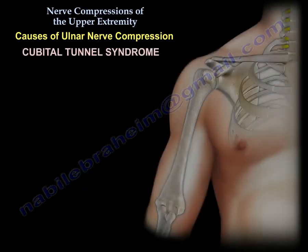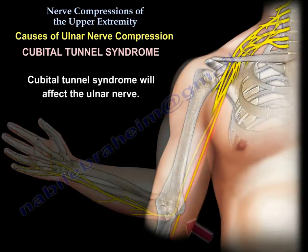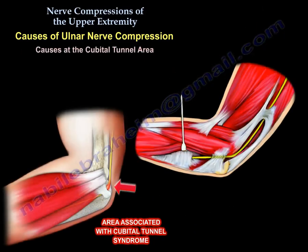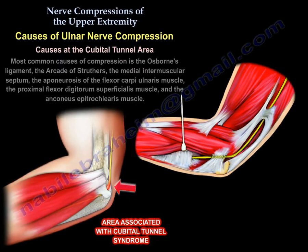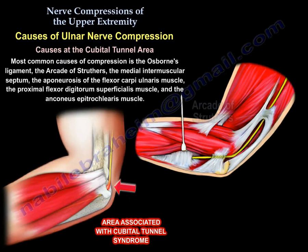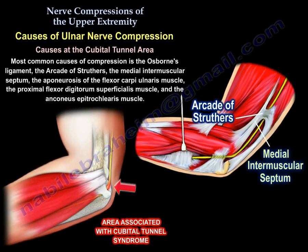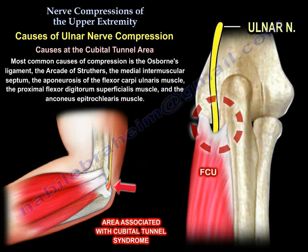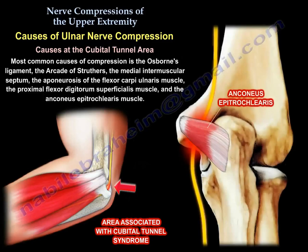The ulnar tunnel syndrome will affect the ulnar nerve. The most common causes of ulnar nerve compression at the cubital tunnel area are the arcade of Struthers, the medial intermuscular septum, the Osborne ligament, the aponeurosis of the flexor carpi ulnaris, the proximal flexor digitorum superficialis, and the anconeus epitrochlearis.